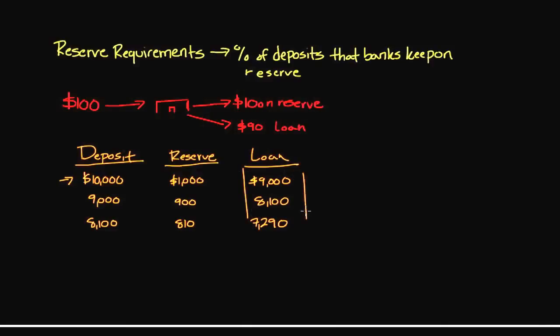From a simple $10,000 deposit, banks were able to create loans of $9,000, $8,100, and $7,290 — and we only did three lending cycles. We can continue to go on and on and see ultimately how much money can be created from simply this one deposit.